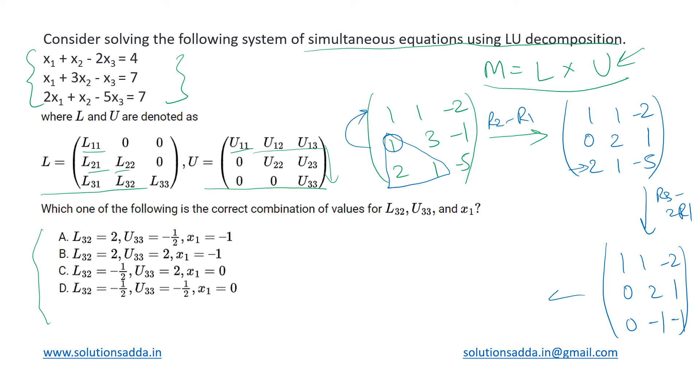Now finally the last, this -1 has to be made 0. How to do that? We cannot use row 1 because if we do any add or subtract then this 0 will also get affected. So we will have to use R2. We can add half of R2 in R3. So R3 plus half of R2 that will give us 1, 1, -2; 0, 2, 1; and 0, 0, -1/2.